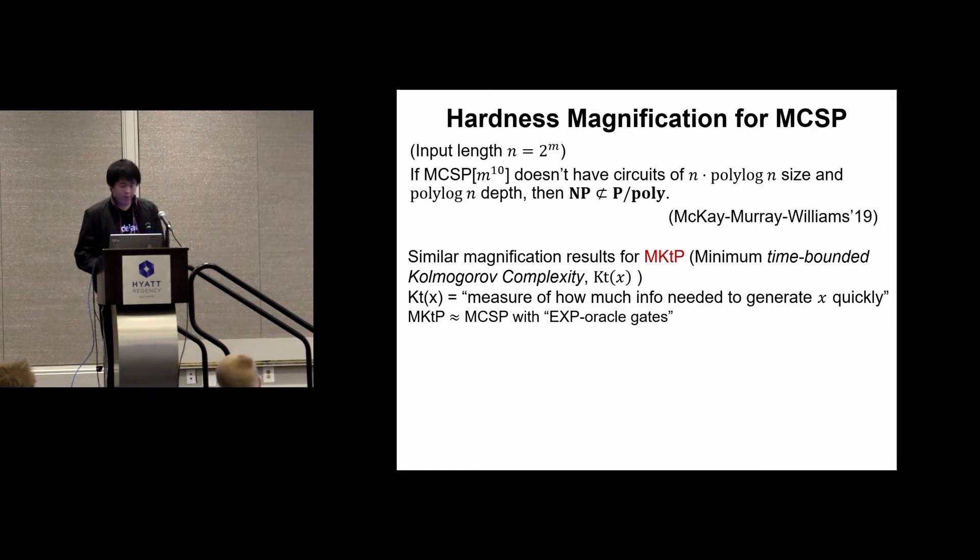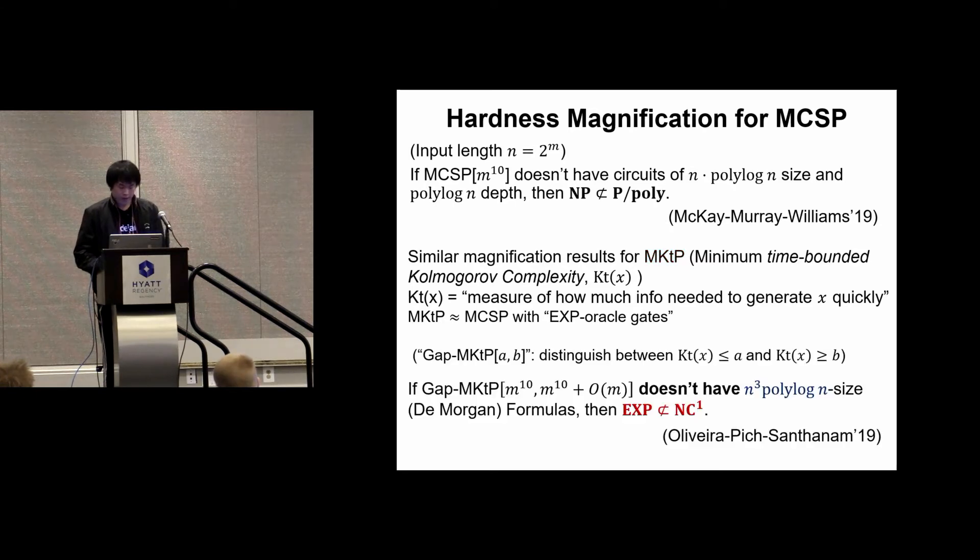MKTP looks like a harder problem than MCSP. In a recent work by Olivera, Peek, and Sentinel, it has been shown that if certain approximate versions of MKTP don't have n^3 times polylog(n) size De Morgan formulas, then EXP is not in NC1.